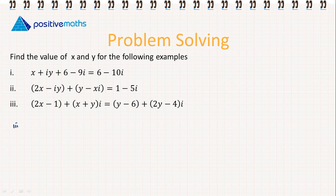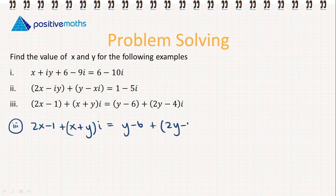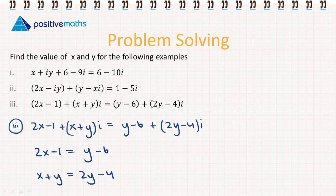Let's look at part 3. We have 2x minus 1 plus (x plus y)i is equal to y minus 6 plus (2y minus 4)i. Equating real and imaginary parts: 2x minus 1 equals y minus 6, and x plus y equals 2y minus 4. Rearranging gives us 2x minus y equals minus 5, and x minus y equals minus 4.